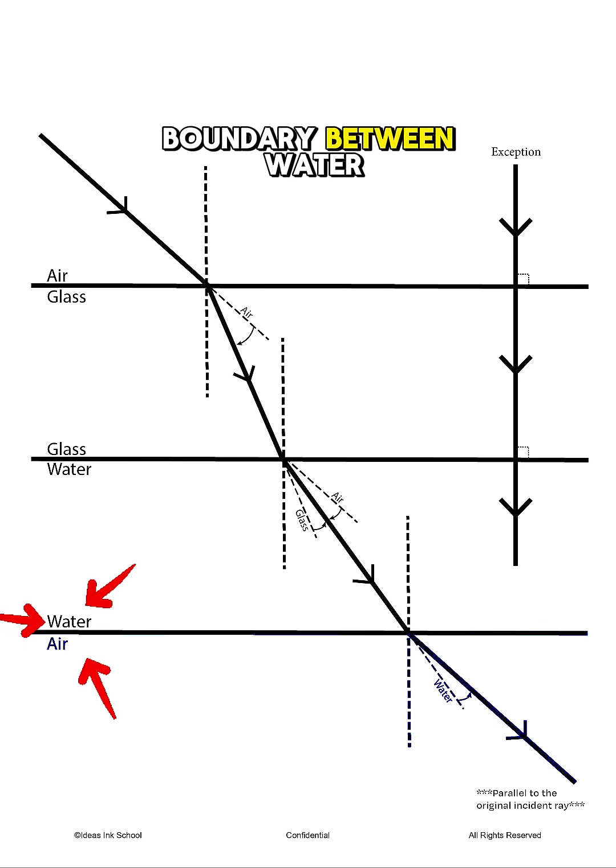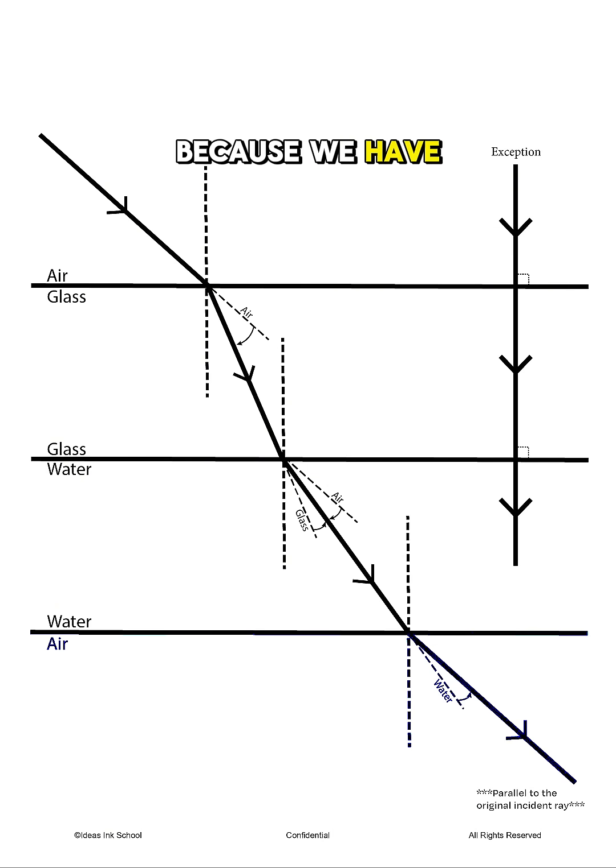Finally, light will now strike the boundary between water and air. Because we have already established that light traveling through the same medium will have the same degree of bending and hence same angle of refraction, when the light ray enters air again, it will emerge parallel to that of the original incident ray.